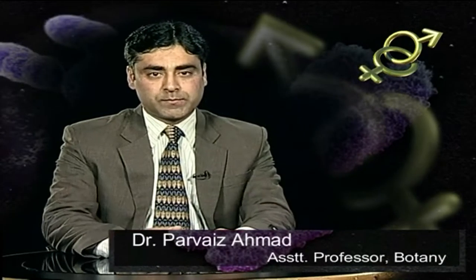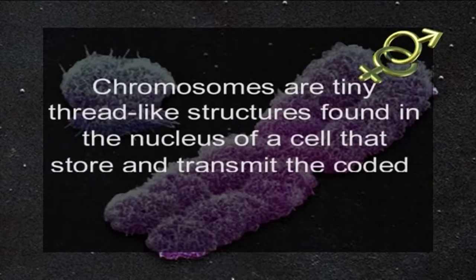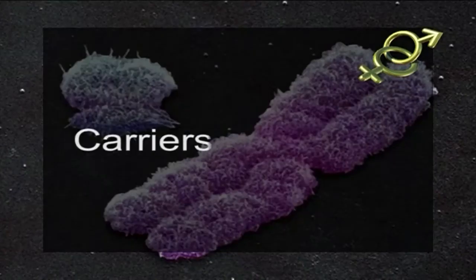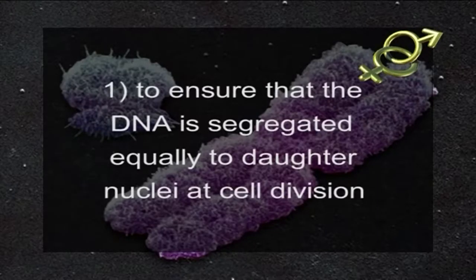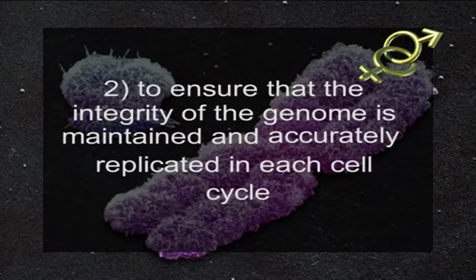Welcome students. Today we are going to throw light on sex chromosomes. First of all, what are chromosomes? Chromosomes are tiny thread-like structures found in the nucleus of a cell that store and transmit the coded information responsible for all the life processes of an organism. Thus chromosomes are commonly known as carriers of heredity. Chromosomes have two main functions: number one, to ensure that the DNA is segregated equally to daughter nuclei at cell division, and number two, to ensure that integrity of the genome is maintained and accurately replicated in each cell cycle.